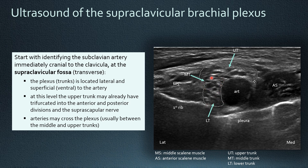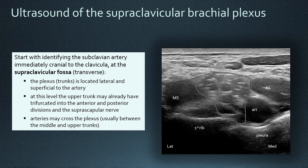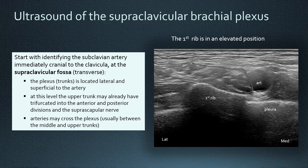In the middle is the middle trunk, and the most superficial is the upper trunk, which already starts dividing at this level in most cases. Here's another form of the plexus — it's very variable from one individual to the other. For example, in this individual, it's elongated, and you can also see that the first rib is in an elongated position as opposed to the previous individual.